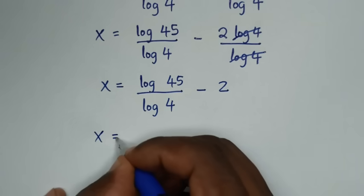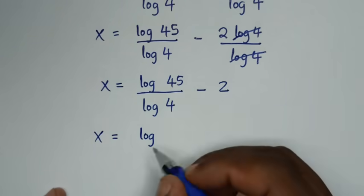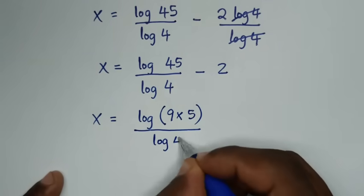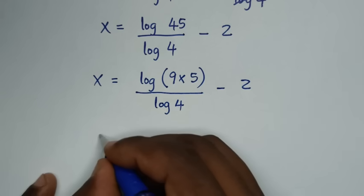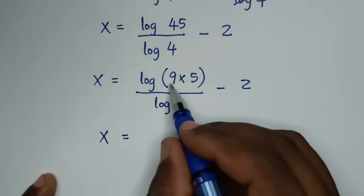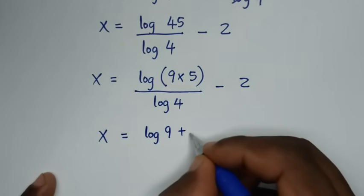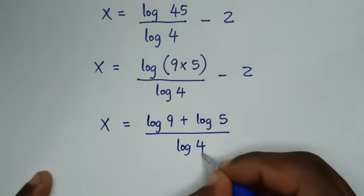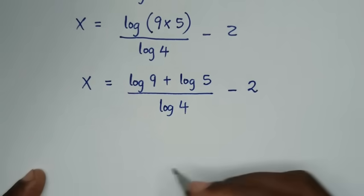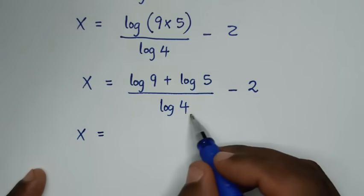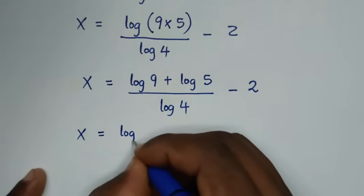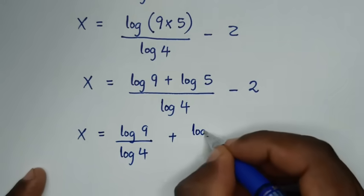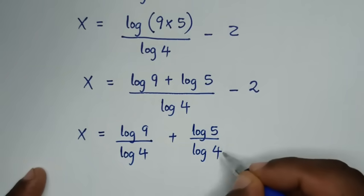Then in the next step, x is equal to log of 45 over log of 4 minus 2. Now 45 is the same as 9 times 5, so log of 45 becomes log of 9 plus log of 5, over log of 4, minus 2. Dividing each term by log of 4, it will be log of 9 over log of 4 plus log of 5 over log of 4, minus 2.